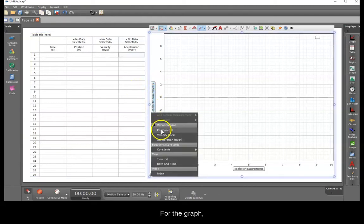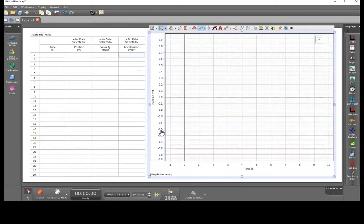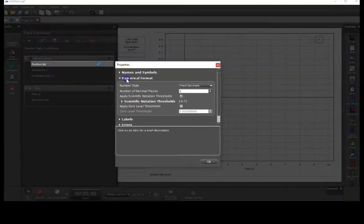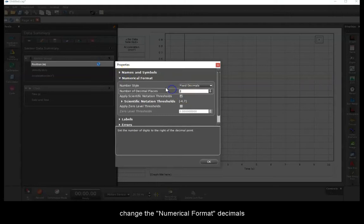For the graph, select position. Go to data summary and for each measurement, change the numerical format decimals to three.